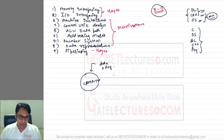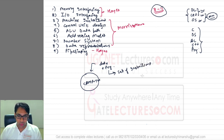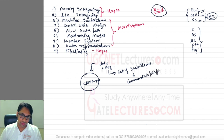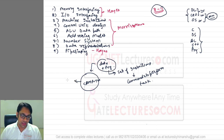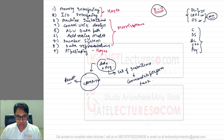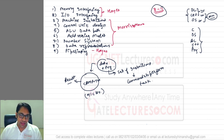So what is a computer? A computer takes some data or programs as input. Programs are a set of instructions, and these instructions are commands to perform certain tasks. After taking this data and the program, the computer gives us some result or output. The computer converts all the programs and data into machine language with the help of the operating system or compilers.